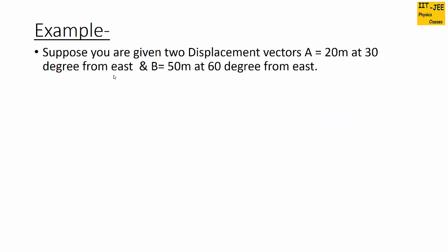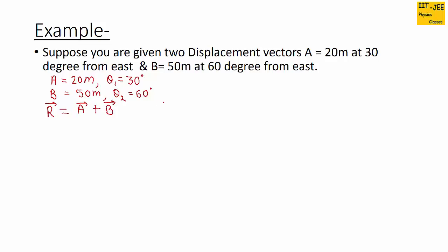Now let's take an example. You are given two displacement vectors a and b. The value of vector a is 20 meters and its angle is 30 degrees, while the value of vector b is 50 meters and its angle is 60 degrees from the east. We have to find the magnitude and direction of resultant vector r, which is the addition of vector a and vector b.